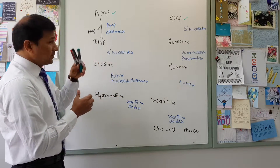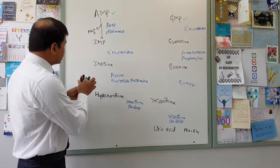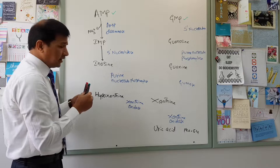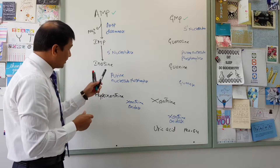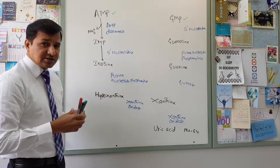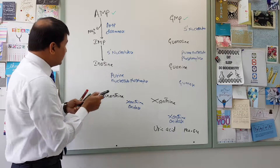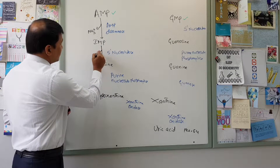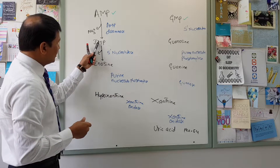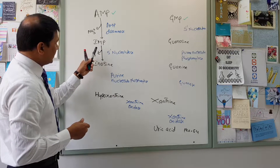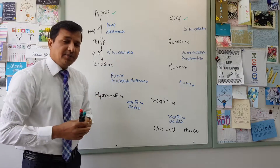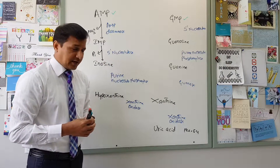Now what happens to IMP? IMP is converted into inosine — that is, the purine nucleotide is converted into a nucleoside — after the release of inorganic phosphate. The phosphate is removed and the job is done by the 5' nucleotidase enzyme.